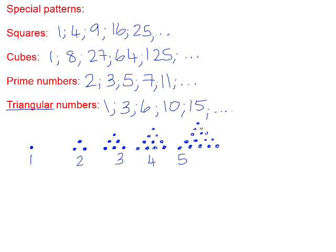Looking at the positions again — 1, 2, 3, 4, 5 — to get from one term to the next, you add the next position number. 1 plus 2 is 3; 3 plus 3 is 6; 6 plus 4 is 10; 10 plus 5 is 15. That is how you generate triangular numbers without drawing them: simply add the next position number to the previous term value, and that gives you the next term of the sequence.